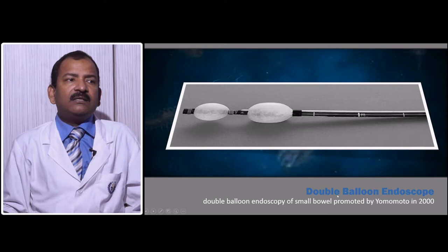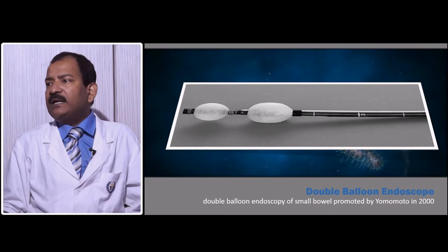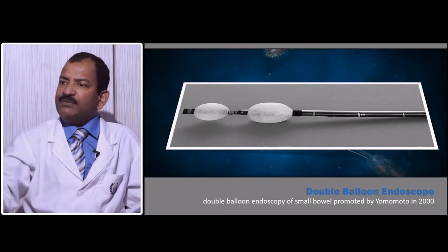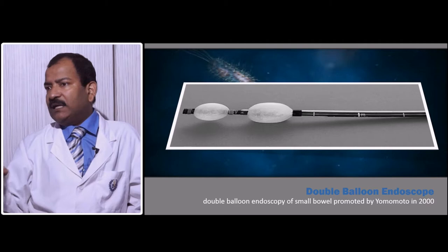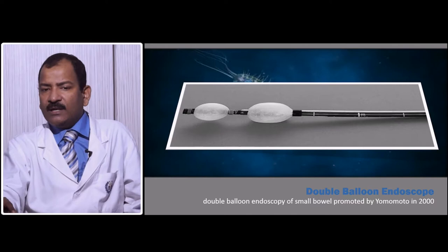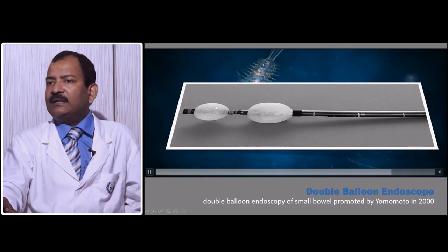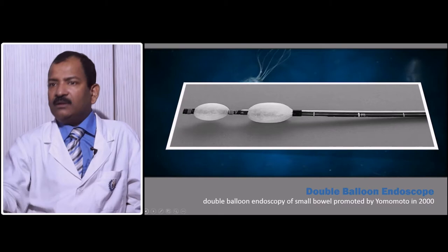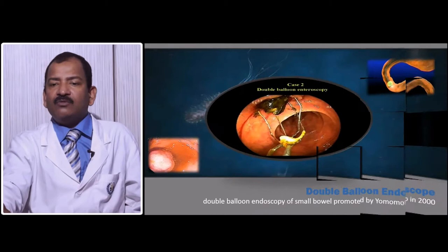The concept of double balloon endoscopy was taken from the earthworm: the earthworm stretches its upper body, sticks to the soil, and then pulls the lower body. It has two balloons and a tube-within-tube. First you push the inner tube, inflate it to hold the lumen of the small bowel, and then the outer tube pulls up. This way it can keep going all the way up to the terminal ileum.